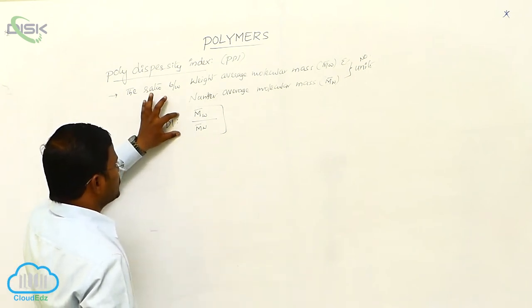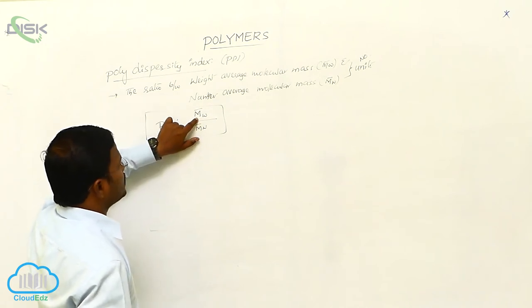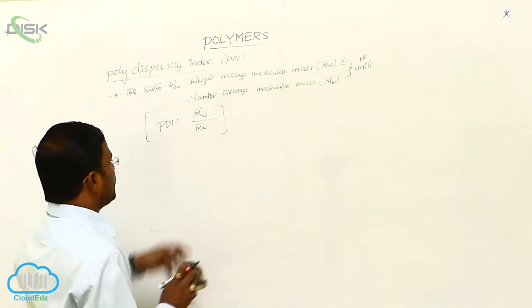So, PDI equals the ratio between weight average molecular mass of given polymer by number average molecular mass of same polymer.